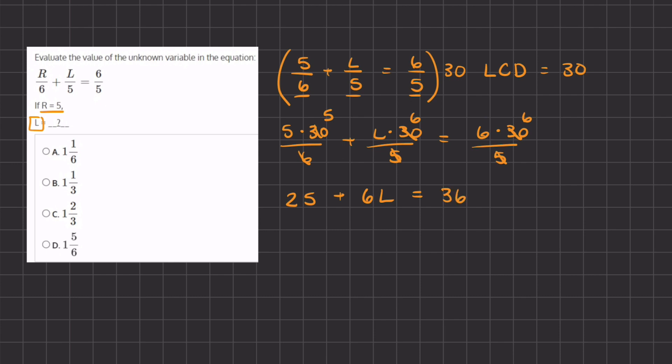So now let's move this 25 from the left-hand side to the right-hand side by subtracting it on both sides. And so these two numbers cancel out, and we have 6l on the left-hand side, and 36 minus 25, which gives us 11 on the right-hand side.